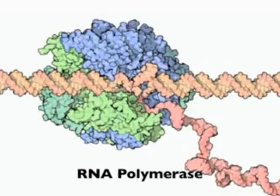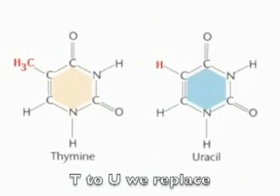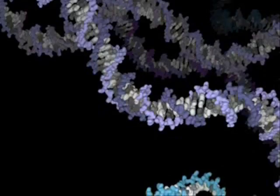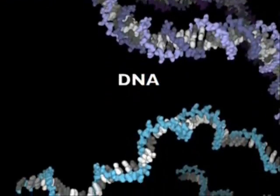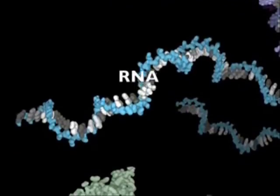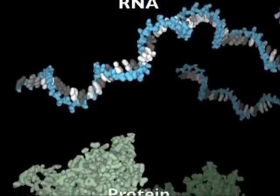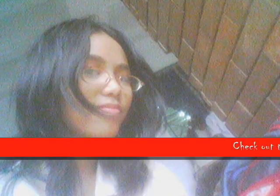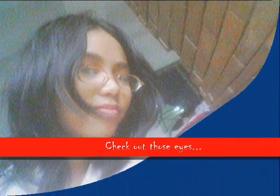RNA — so it changed the T into U, the T into U. RNA, so it changed the T into U.